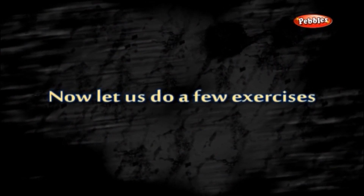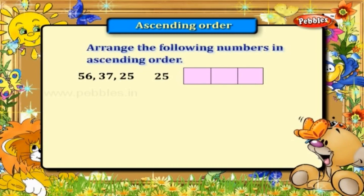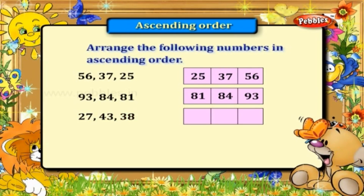Now let us do a few exercises. Arrange these numbers in ascending order. The numbers are 56, 37, and 25. The order is 25, 37, and 56. Next: 93, 84, 81. The order is 81, 84, and 93. Next: 27, 43, and 38. The ascending order is 27, 38, and 43.